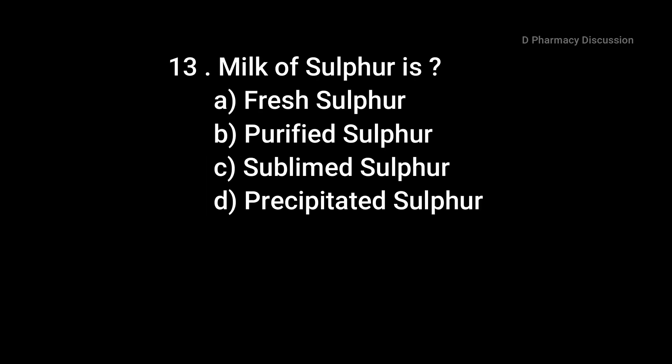Question 13: Milk of sulfur is — option A: fresh sulfur, B: purified sulfur, C: sublimed sulfur, option D: precipitated sulfur. Correct answer is option D — precipitated sulfur is called milk of sulfur.